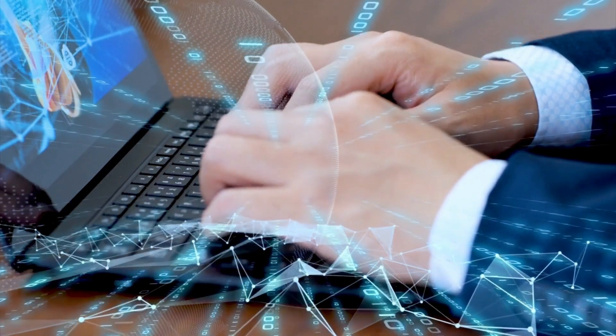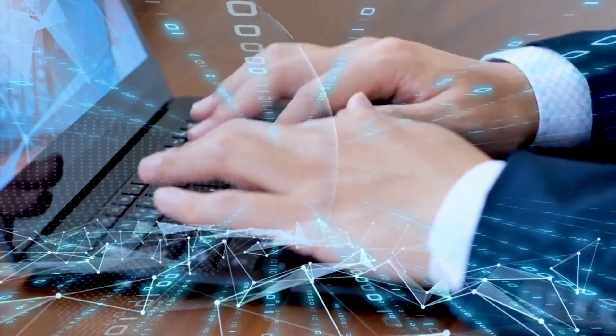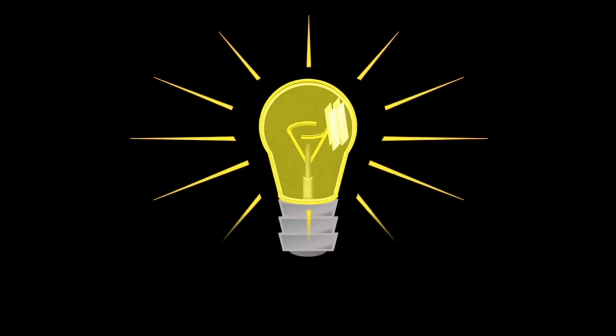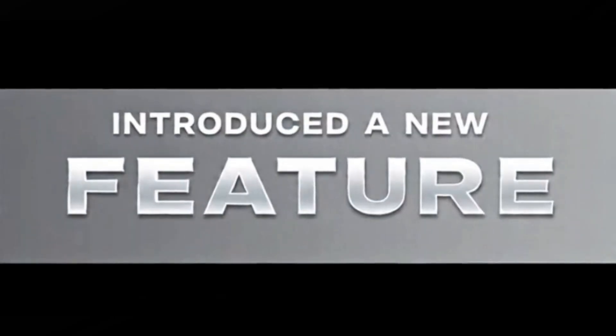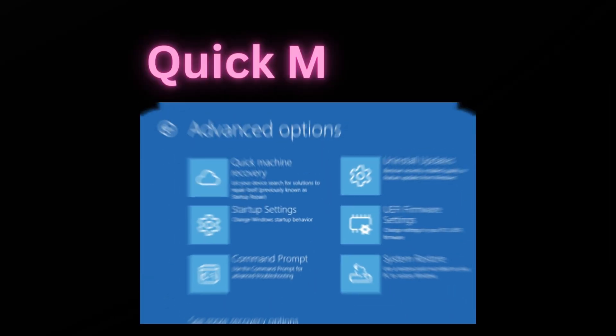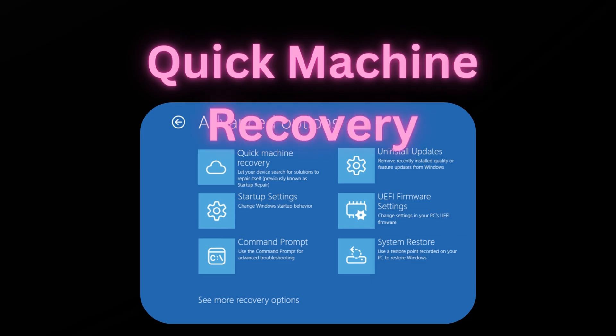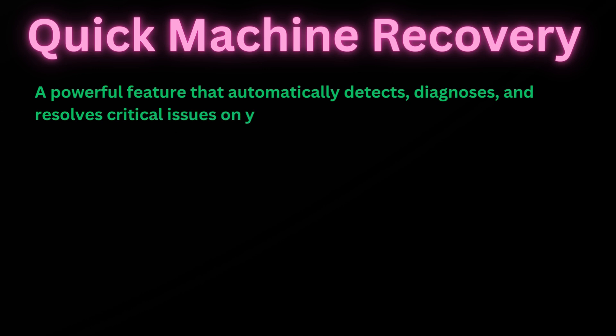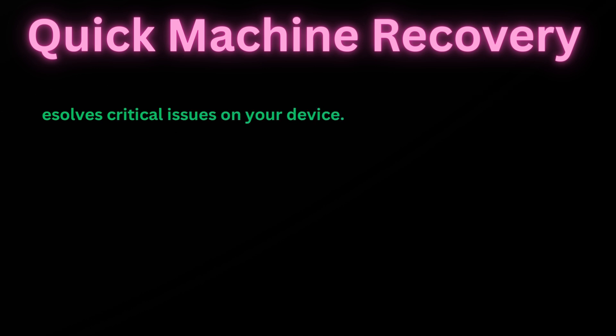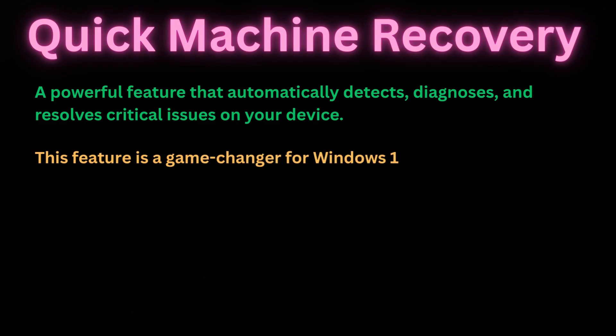You want to fix these issues as quickly as possible. Until now, there was no solution to automatically remediate these problems without manual intervention. But now Microsoft has introduced a new feature called Quick Machine Recovery, starting from Windows 11 version 24H2. Quick Machine Recovery is a powerful feature that automatically detects, diagnoses, and resolves critical issues on your device. This feature is a game changer for Windows 11 devices facing a boot issue.